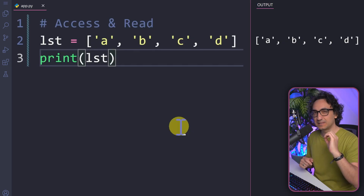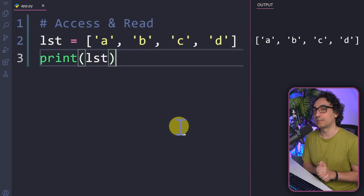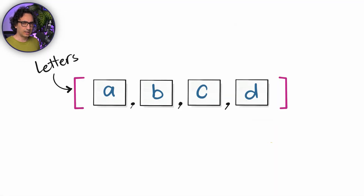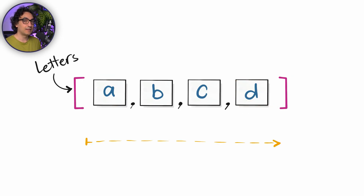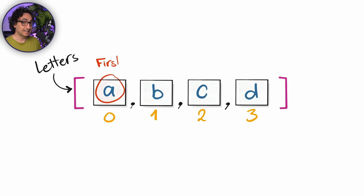What is more interesting is to access only one specific item. For that we use something called indexing. Looking at our list, if you want to access a specific letter — the first, last, or third — you are interested in the position number of each item. Starting from left to right, the first item has index zero. Be careful: we do not start from one. So a has index zero, b has one, c has two, and d has three.